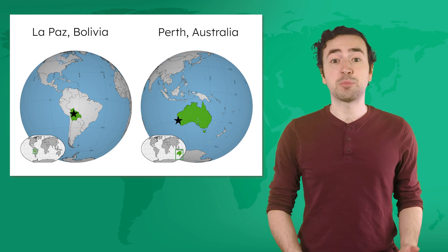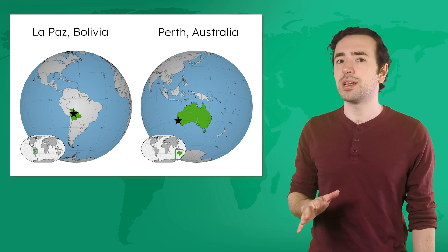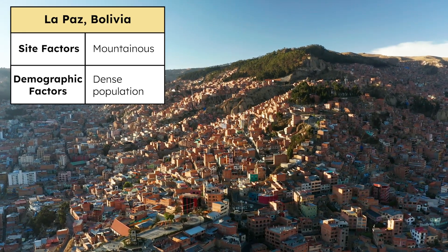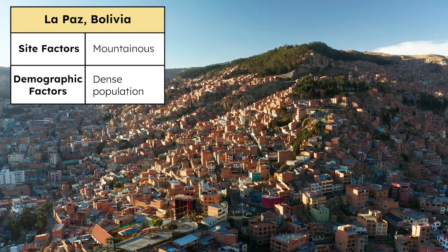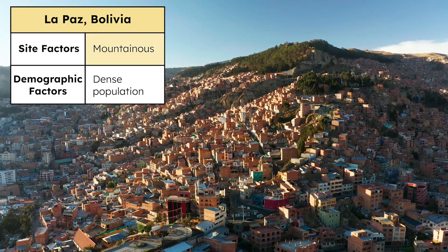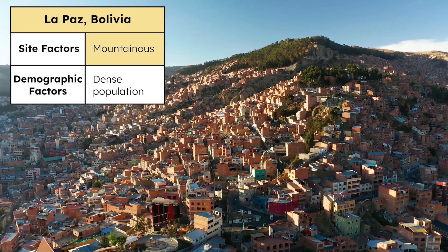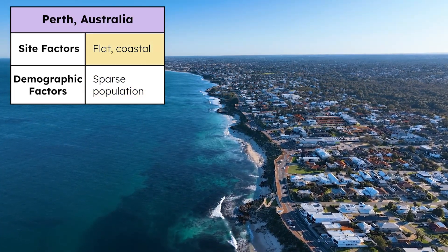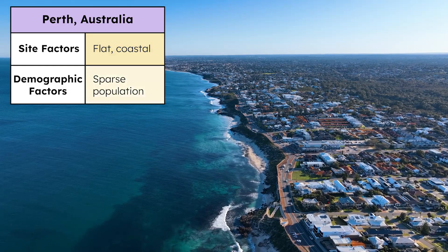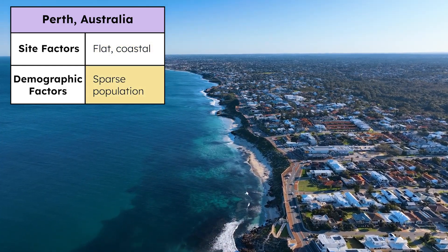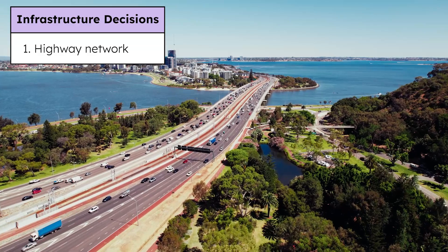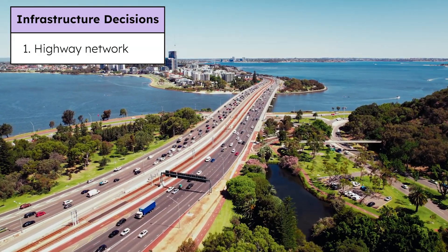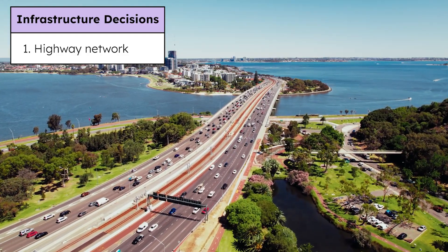La Paz, Bolivia, and Perth, Australia are two completely different cities with different infrastructure needs. Geography and demographics both have big impacts on infrastructure. La Paz is nestled in a mountain valley, so its terrain limits the city's expansion and creates a high population density. Perth, meanwhile, is on flat, coastal land, making the city's population more spread out and less dense. Perth's flat land makes it easy for the city to spread outward, which is why its transportation infrastructure includes an extensive highway network that connects people living far away from the city's center.